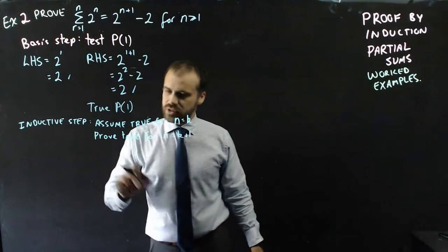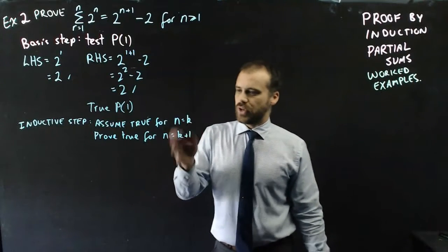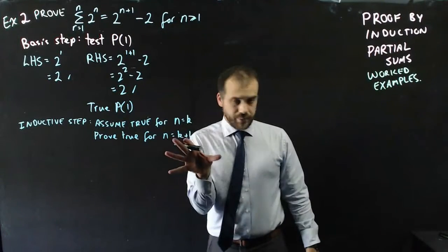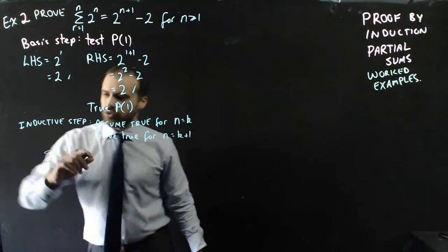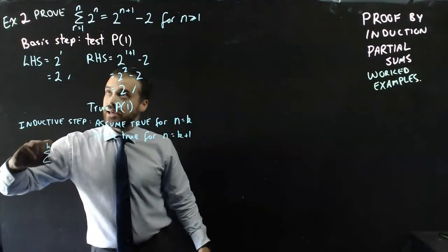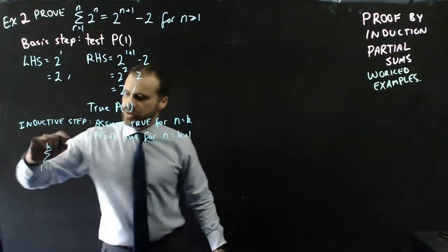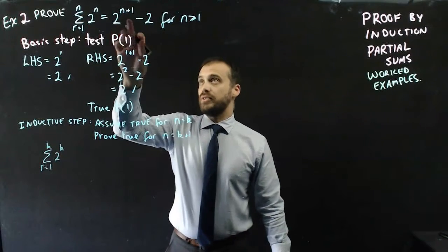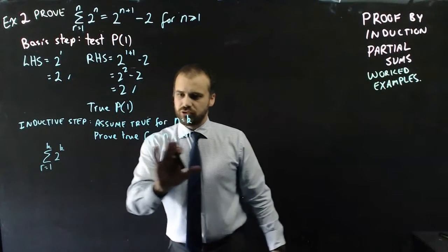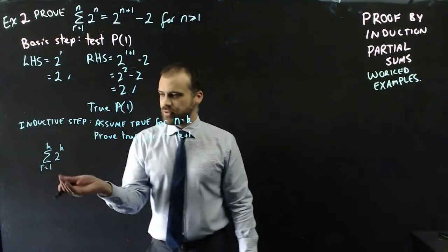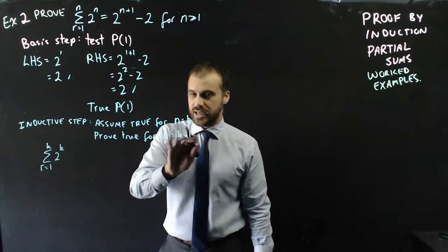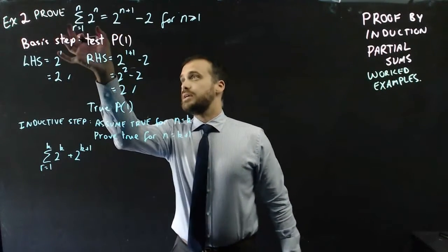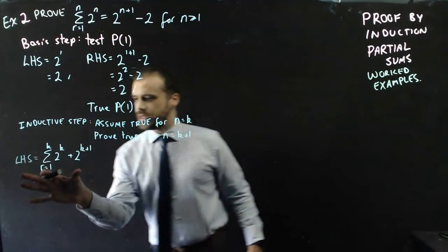Now the inductive step: assume true for n equals k, prove true for n equals k+1. Using summation notation, the sum from r equals 1 to k of 2^r — we've assumed that equals 2^(k+1) minus 2. But I'm trying to get to k+1, so I need to add on the next term, which is 2^(k+1). That gives me my left-hand side for the k+1 case.